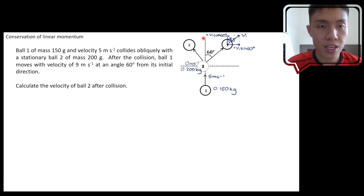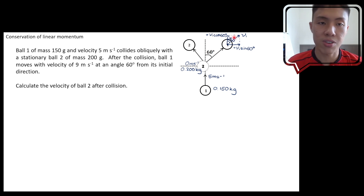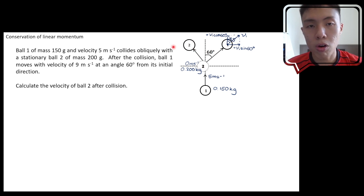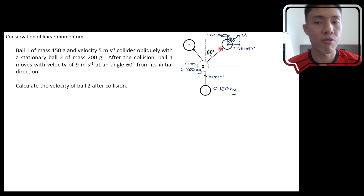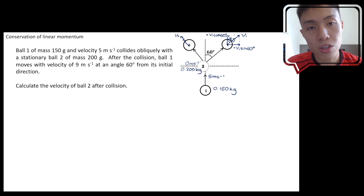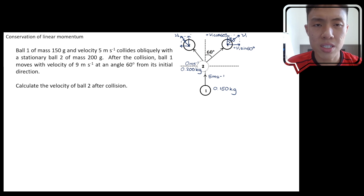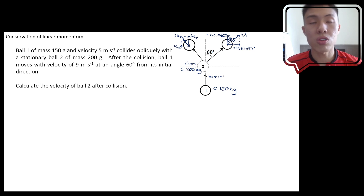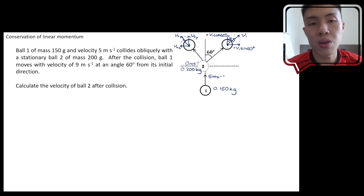The x-component is positive v1 sine 60 — positive because it's pointing to the right. The y-component is positive v1 cos 60 — positive because it's pointing upwards, and cosine because 60 degrees is near the y-component. For ball 2, the angle is unspecified, so we label the components as v2x and v2y without assuming sine or cosine.